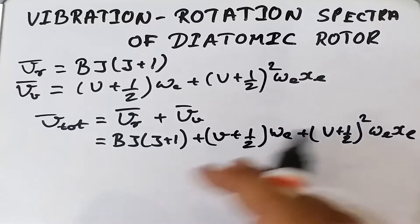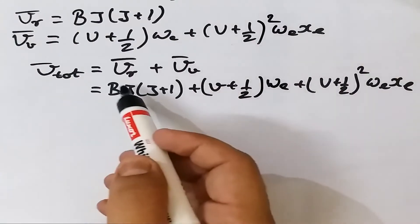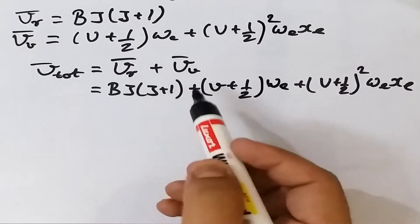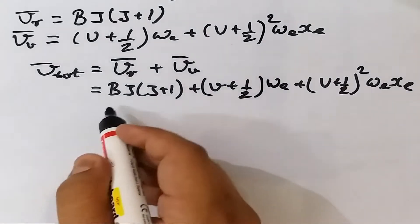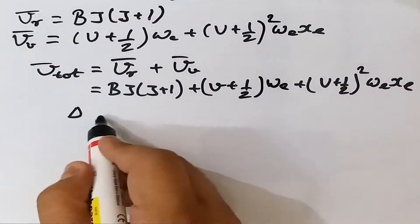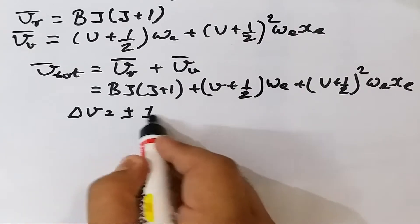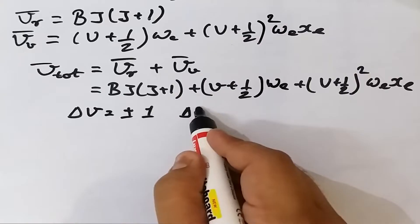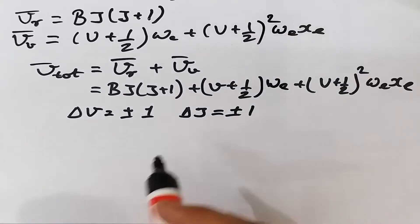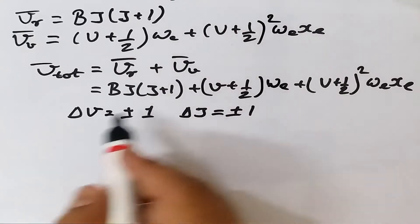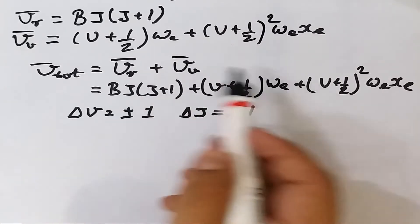Since we are considering both rotation and vibration, the selection rules for both come into play. The selection rule for vibration is Δv = ±1, and similarly for rotation, ΔJ = ±1. Both selection rules will come into the picture when we calculate the spectral lines.